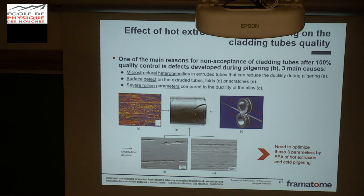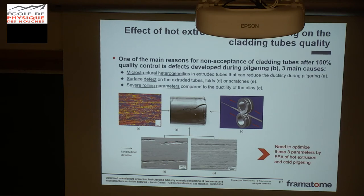I'll give you an example of a type of defect that can sometimes occur in manufacturing — this can happen during the cold rolling process. By experience, we know that three main parameters can affect this type of defect: first, microstructural heterogeneities, where a bad recrystallization can be the cause; second, surface defects already present after hot extrusion, such as folds or scratches; and third, if the rolling process is too severe compared to the ductility of the alloy, we will get this kind of defect.